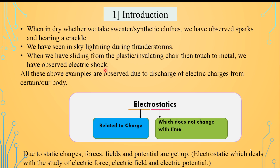Suppose we sit on a bus in an insulating seat, and just after sitting on that seat we touch a metal object — at that time we feel an electric shock. All these examples are due to the discharge of electric charge from certain bodies. Once we sit on a plastic chair or wear synthetic cloth, charge gets accumulated on our body, and when our body touches metal, that charge gets transferred to the metal — that's why we observe the electric shock.